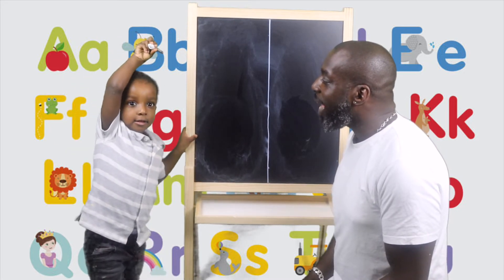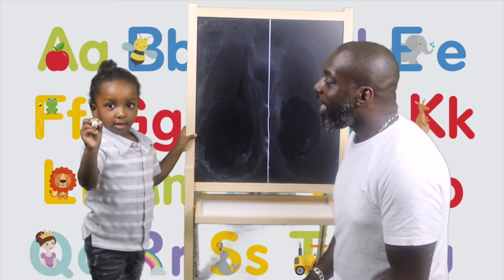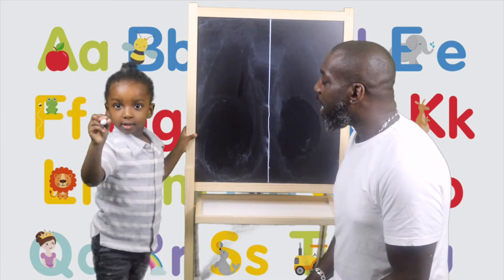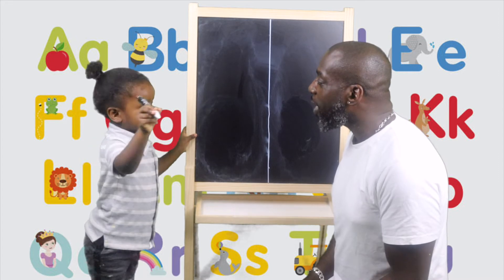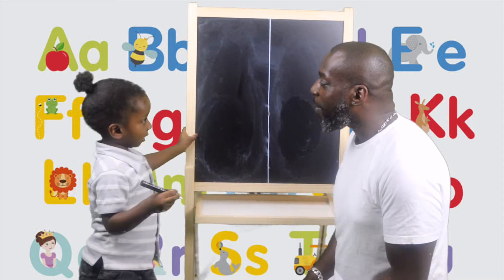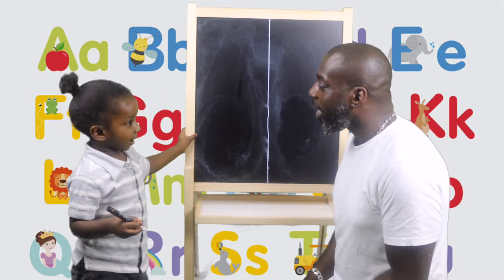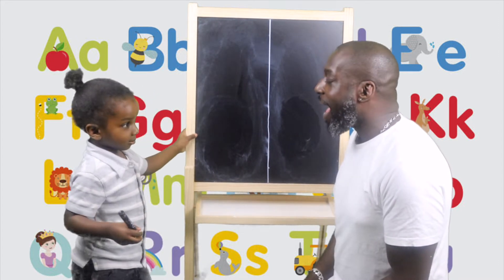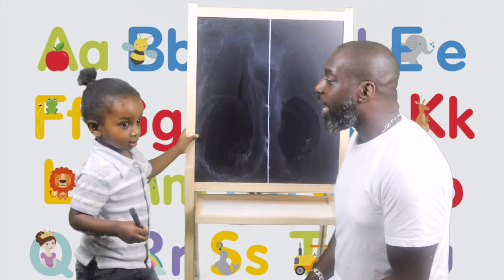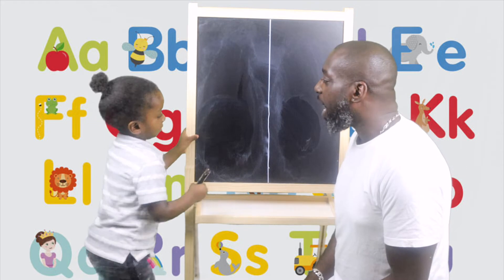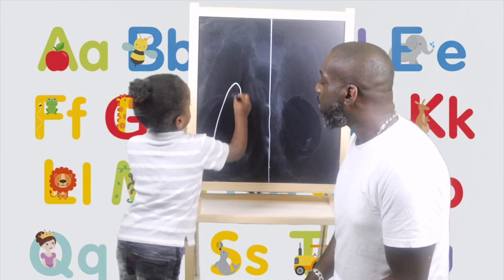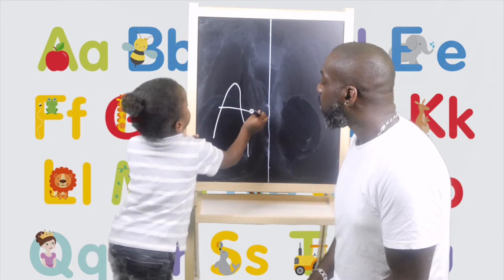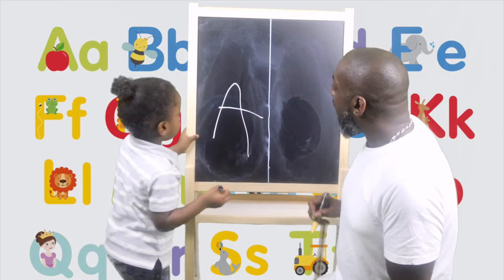Are we going to do the alphabet today? Yes. Okay. What's the first letter of the alphabet, Amari? A. Well done. And how do we write an A? Alpha. Alpha. Okay.